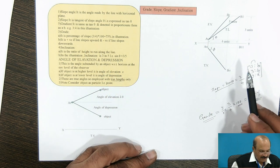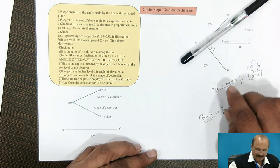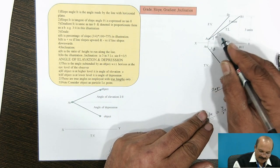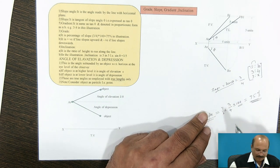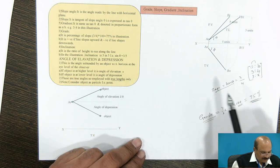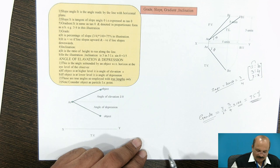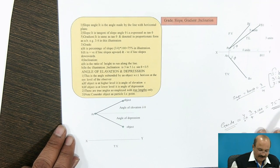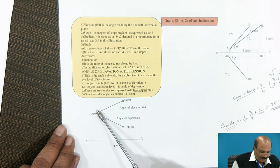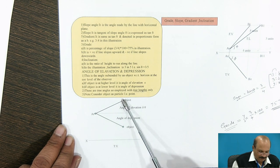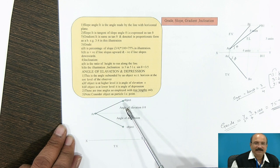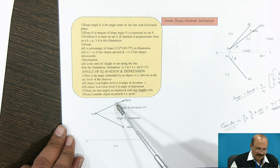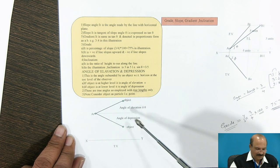It is a positive slope if the line goes upward. If you consider the line coming in the upward direction from a reference point, that is positive; in the downward direction it is negative. Angle of elevation and angle of depression: this comes above the XY line. If you observe the object in the upward direction from your eyesight, it is an angle of elevation. If you observe it in the downward direction, that is an angle of depression.